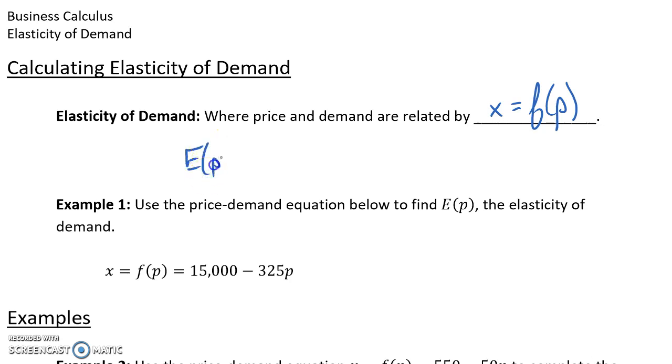Our formula for elasticity, then, will be negative P times the derivative of our price-demand function all over the original price-demand function. Or another way we could write this would be the opposite of P times the derivative of X, so the derivative of that price-demand function, over the original price-demand function.